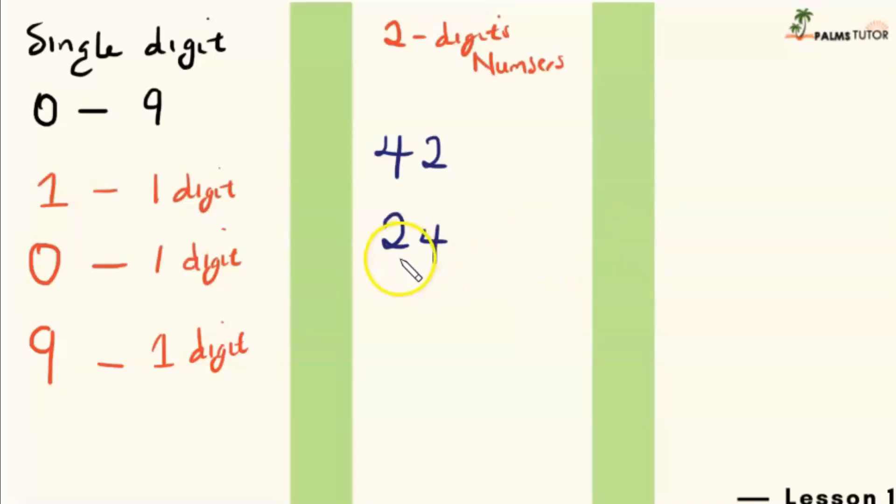And that's why the place of each of these digits matters in telling us what number this is. So because two now is in the tenth place, it's now 24. Don't worry, we'll learn more about that.